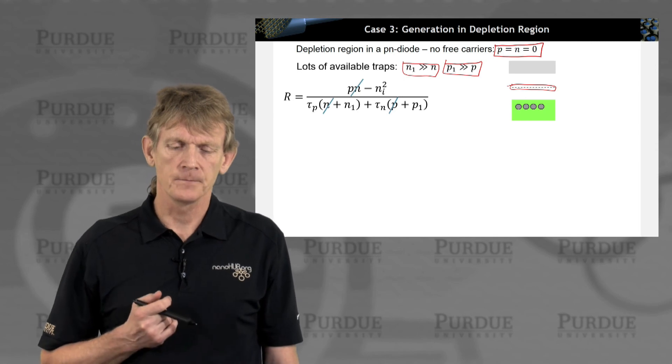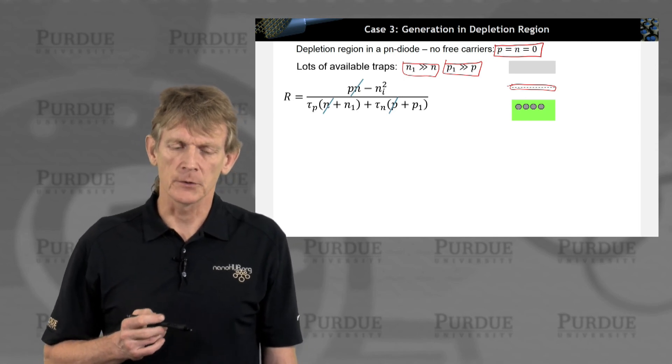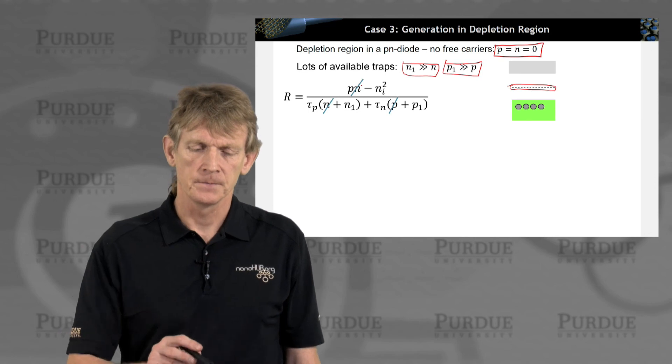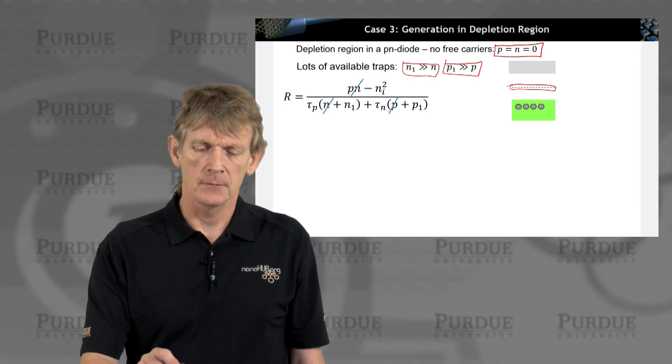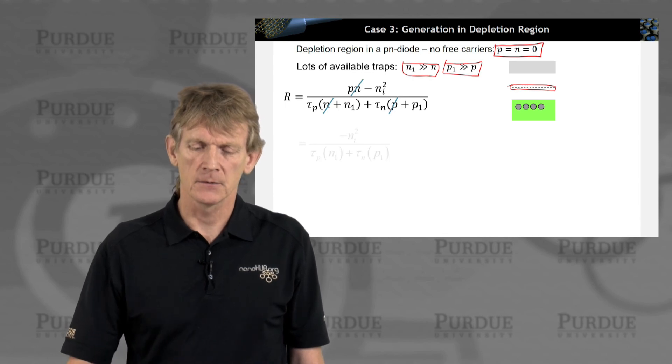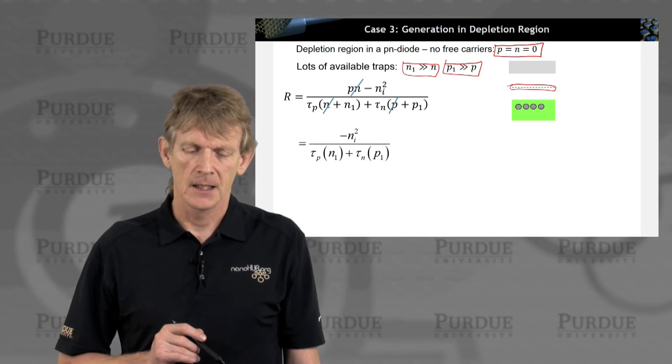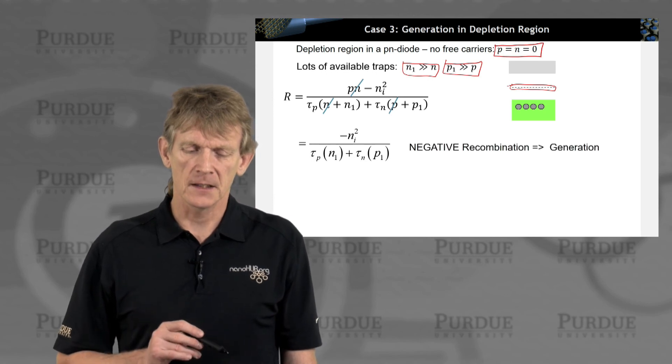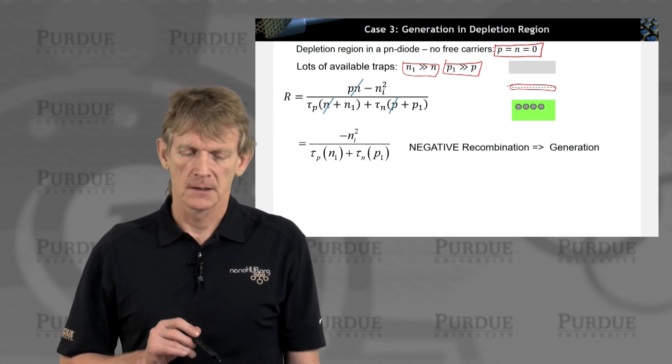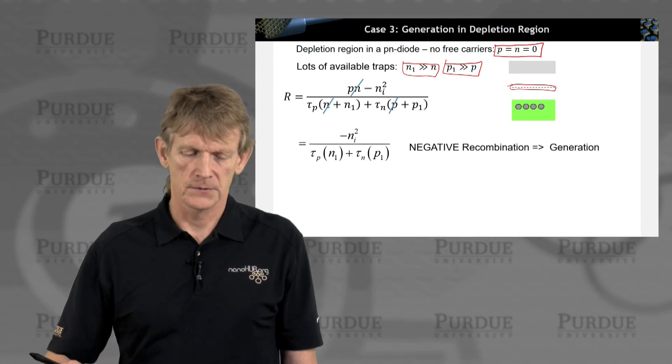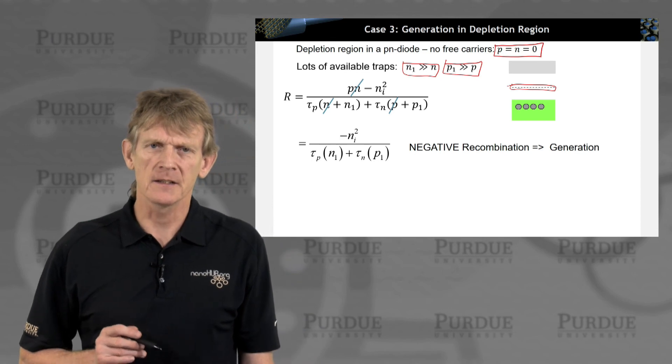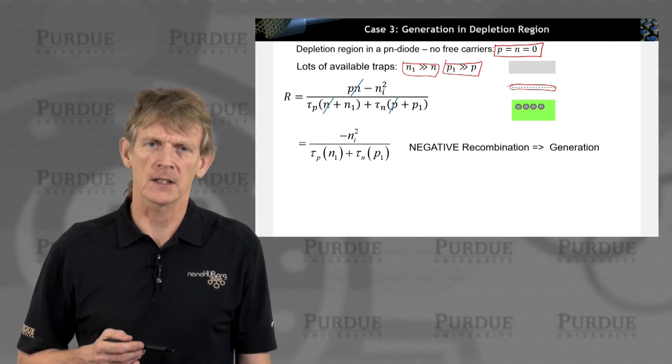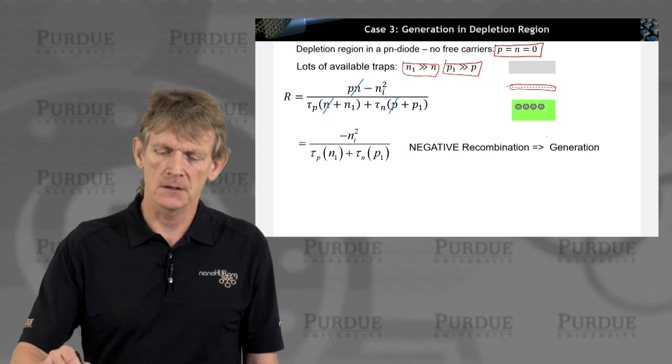So now we can begin to chuck some numbers. So PN we set is 0. And we have N plus N1, and P plus P1. We chuck the P's over there. And we get minus NI square, tau N, tau N1, tau PN1, tau NP1. So what we see here is a negative recombination. And I mentioned this in the previous section. Negative recombination means generation.